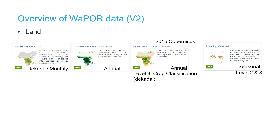The land layers consist of net primary production, which is then converted to total biomass production. It also provides the land cover classification, which is derived from the Copernicus land cover map of 2015, with an annual update of the cropland into irrigated, rainfed, and fallow based on a water deficit index. The level 3 data has a crop classification map developed by WAPOR. The phenology layers derive from satellite-based vegetation index time series and provide the start and end of the cropping season. This information is available only for level 2 and 3.